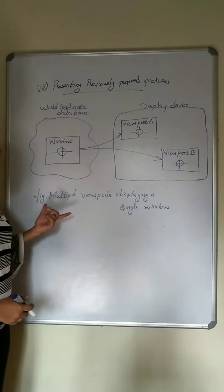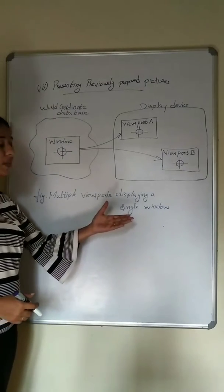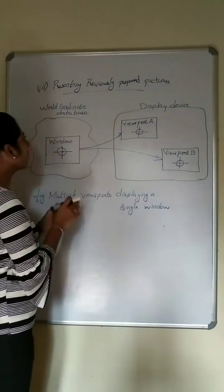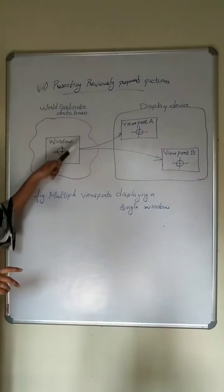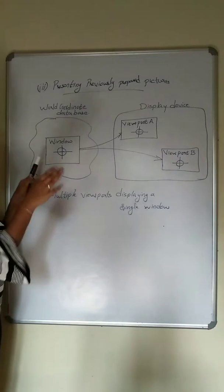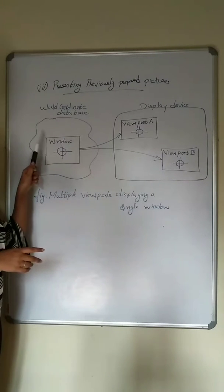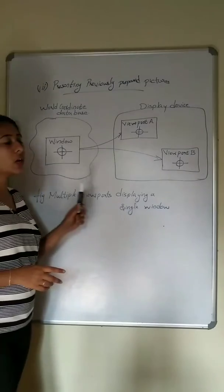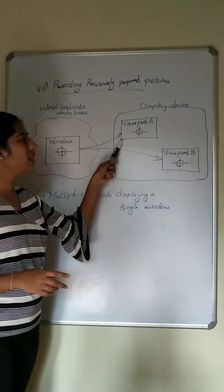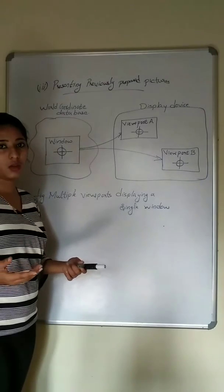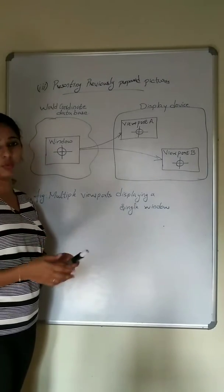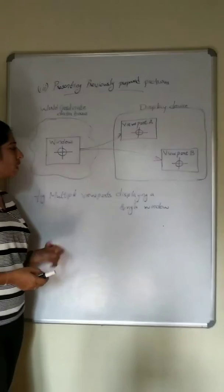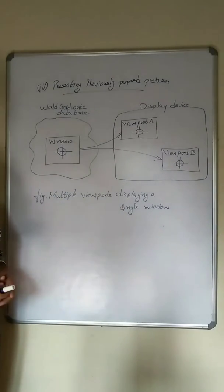Next, we look at multiple viewports displaying a single window. From the entire database, we select a window — a rectangular area from the world coordinates. This window can be displayed on multiple viewports on the display device, for example viewport A and viewport B. This is the figure of multiple viewports displaying a single window.